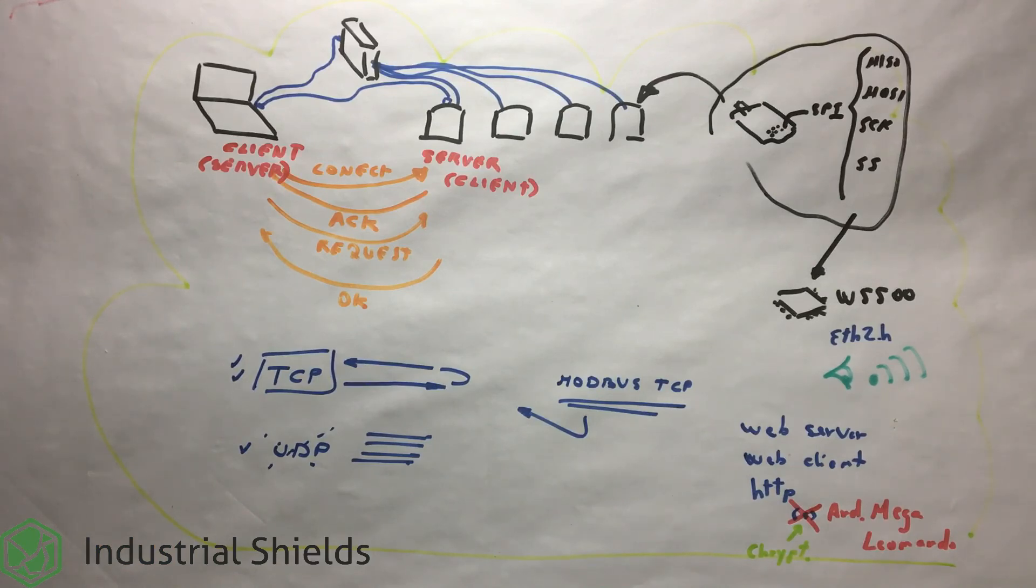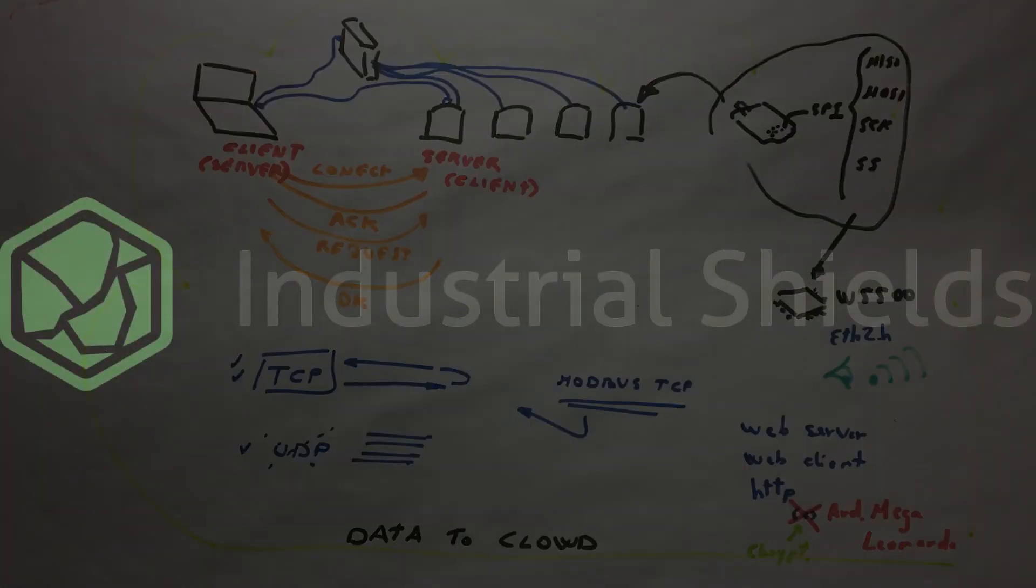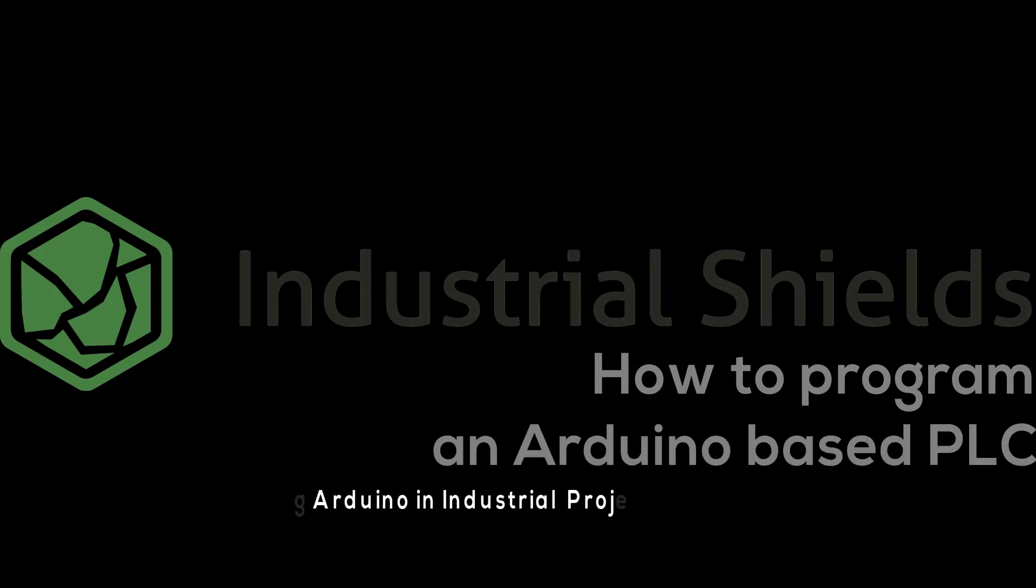After seeing the current chapter, you know now that it is possible to define a local network through Ethernet protocol using PLCs based on Arduino from industrial shields.